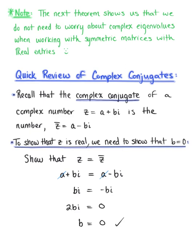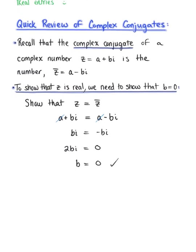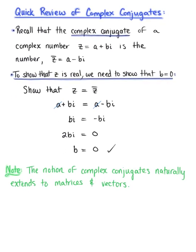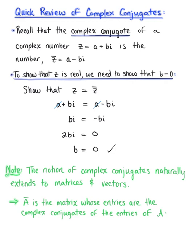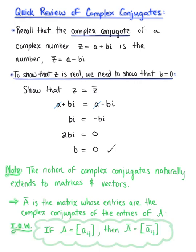So therefore we have verified that z is real. Now the concept of complex conjugates can be naturally extended to vectors and matrices. For example, we can define matrix A-bar to be the matrix whose entries are the complex conjugates of the entries of matrix A. In other words, if matrix A is defined by its i,j-th entry, then the complex conjugate of matrix A is the matrix defined by the complex conjugate of the i,j-th entry.